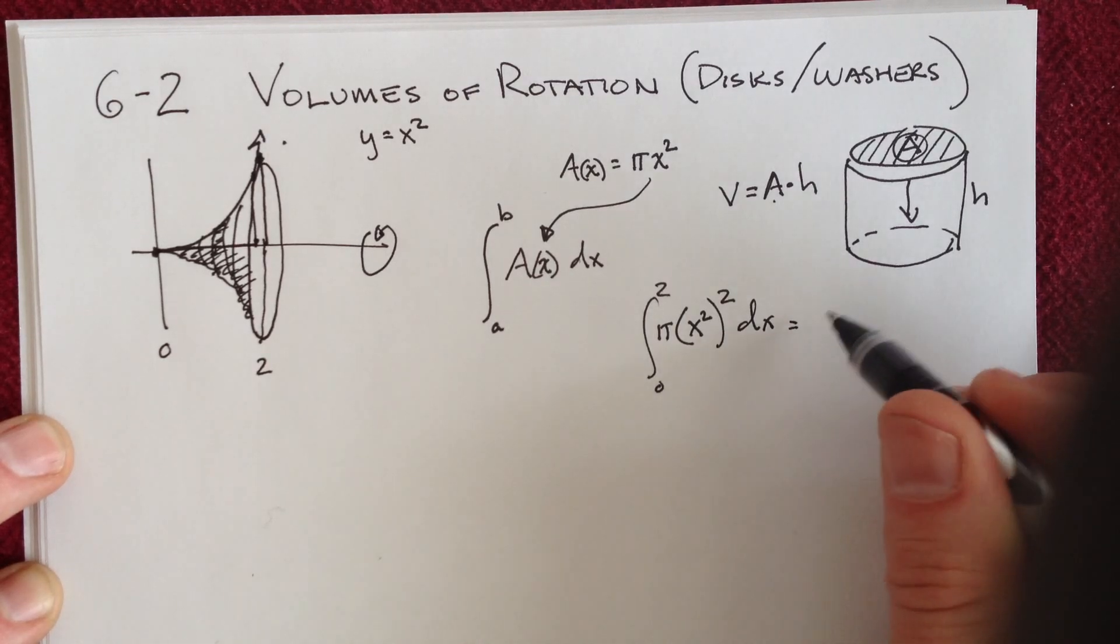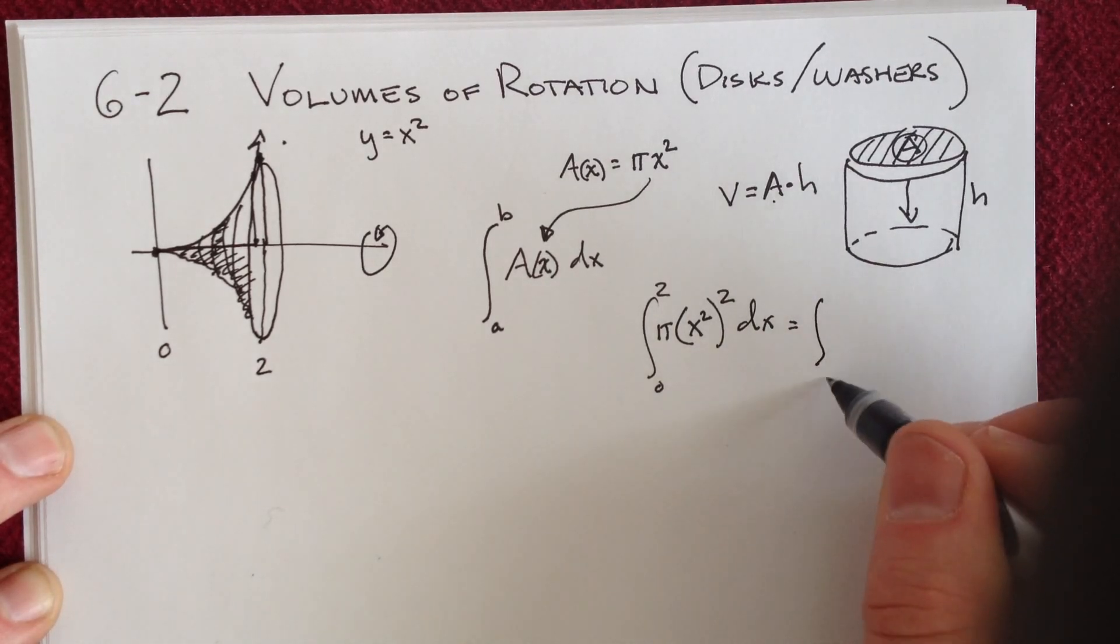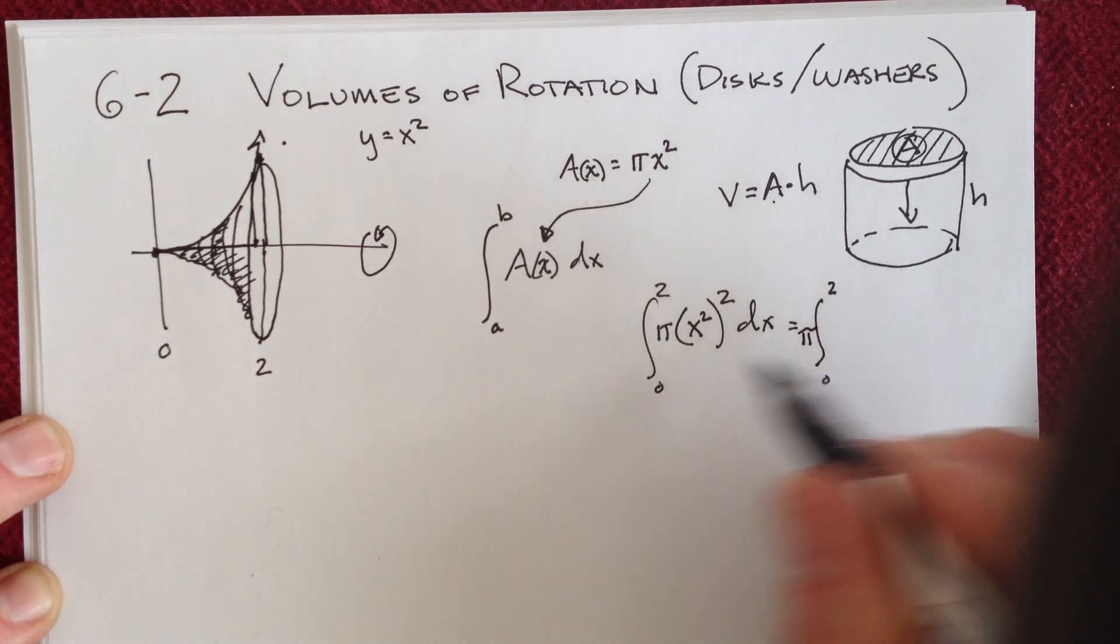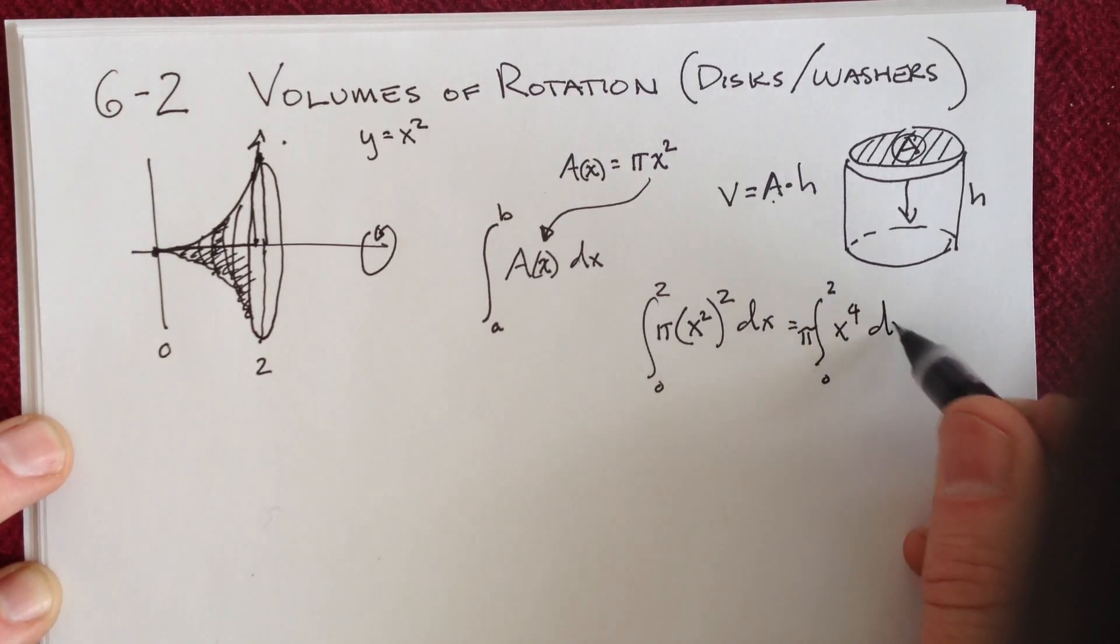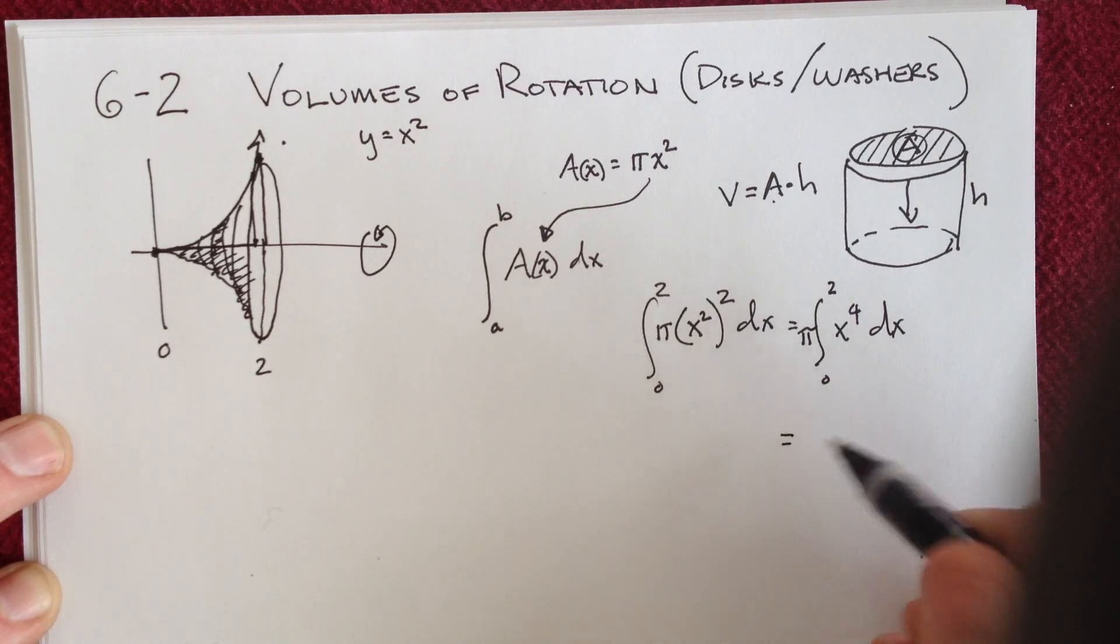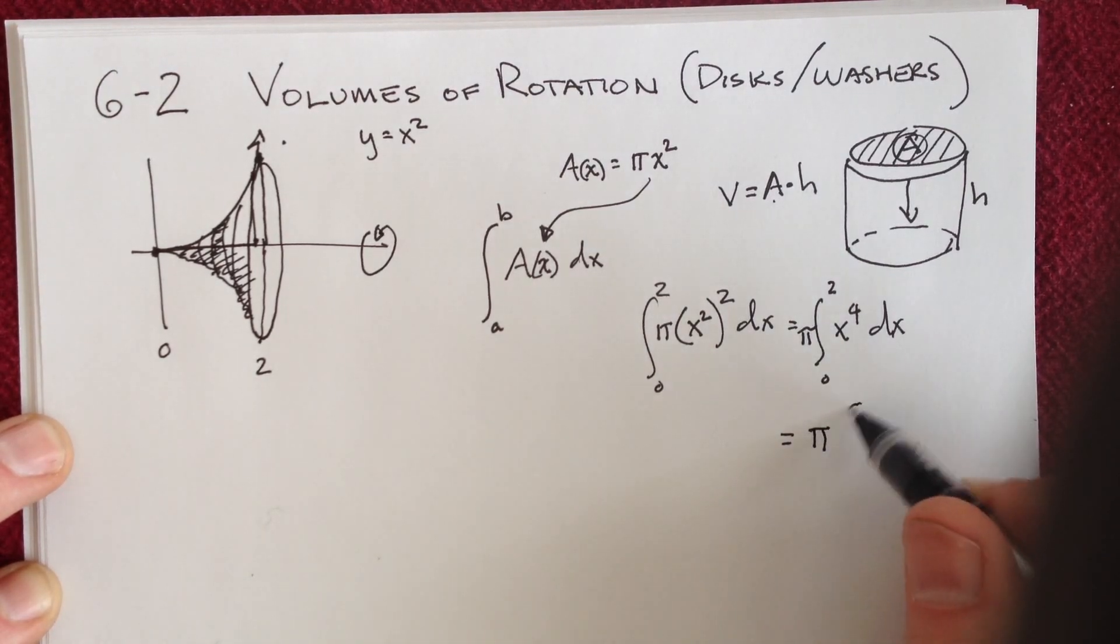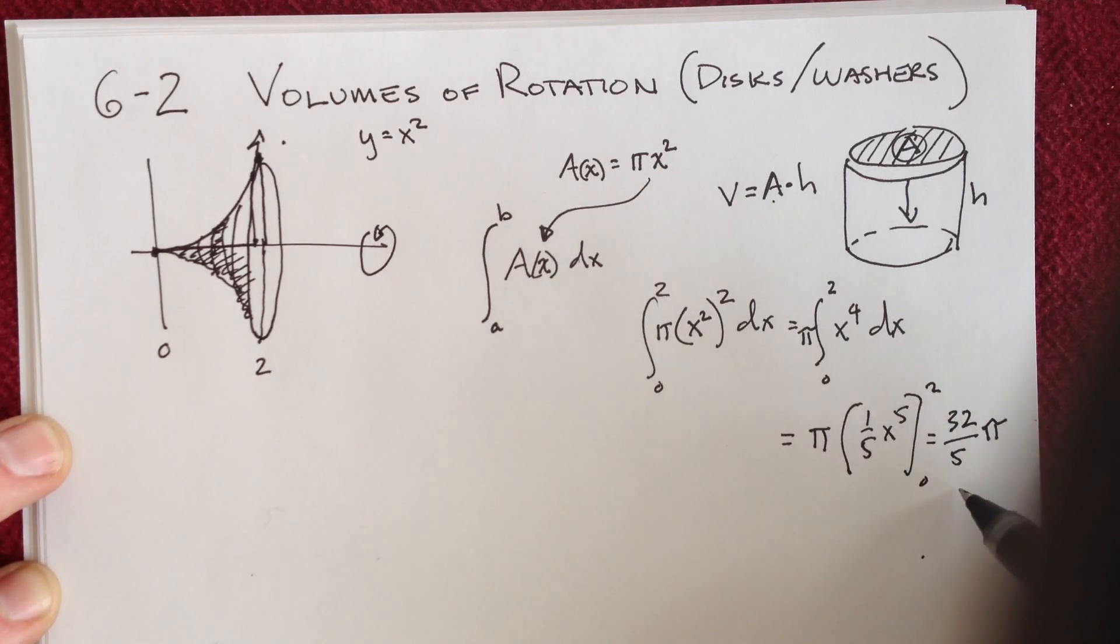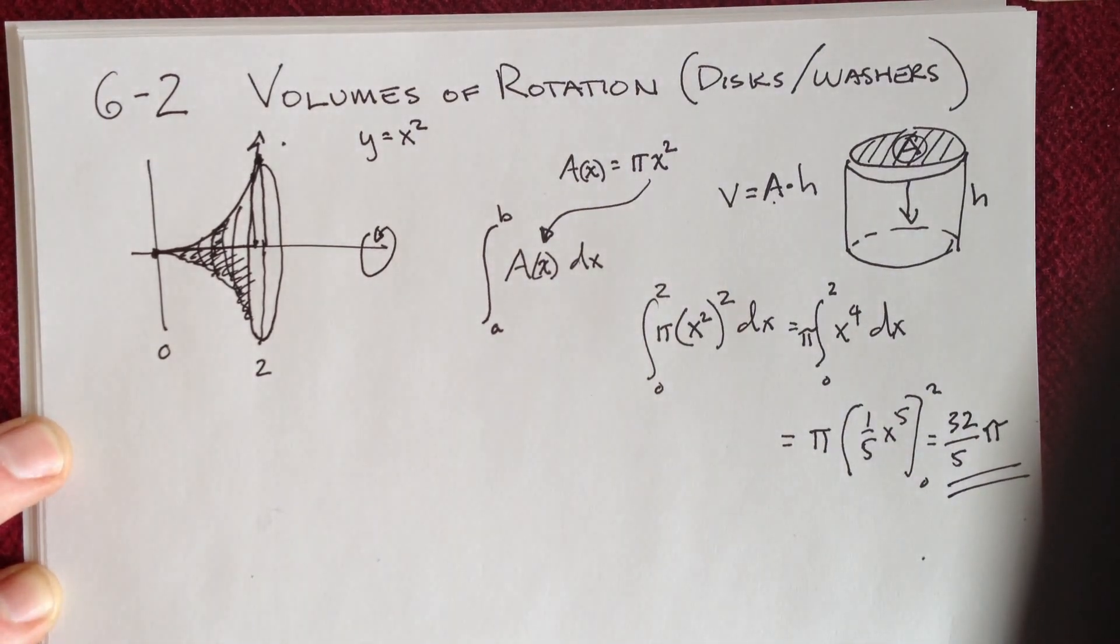In this case, it's the integral from 0 to 2. I can always pull the pi out front. x squared squared is x to the 4th dx. That's very simply then going to be pi times, in this case, 1 fifth x to the 5th evaluated from 0 to 2. When I plug in 2, that's going to give me then 32 over 5 times pi. That would be the volume of this particular shape.